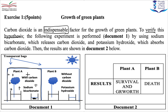Plant B is also placed in a transparent bag, but here we added potassium hydroxide, which absorbs carbon dioxide from the air. So in experiment B, the plant is without carbon dioxide — there is no carbon dioxide in the air around plant B. You can see the difference in carbon dioxide conditions between the two experiments.